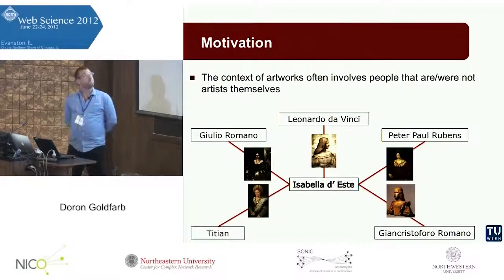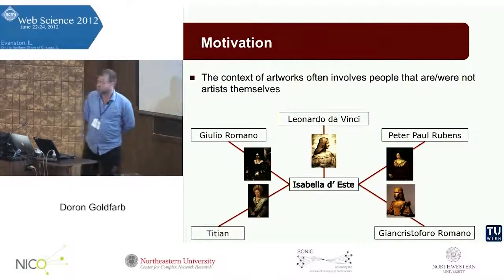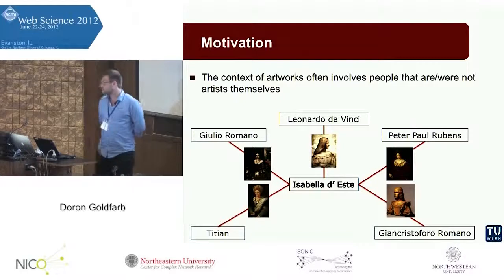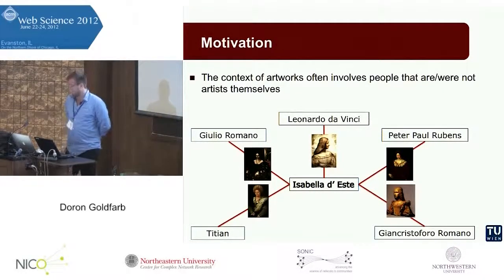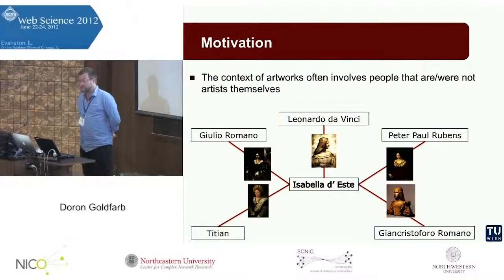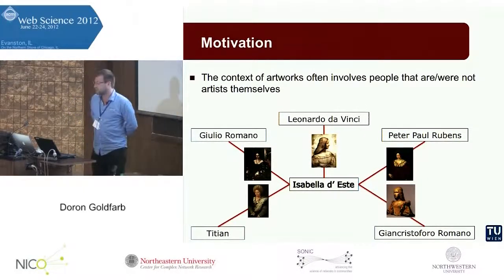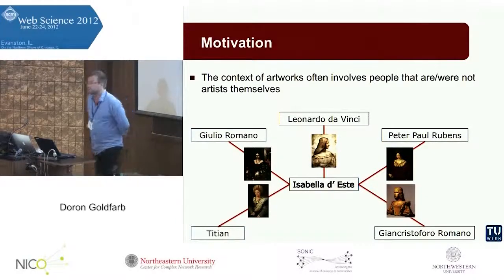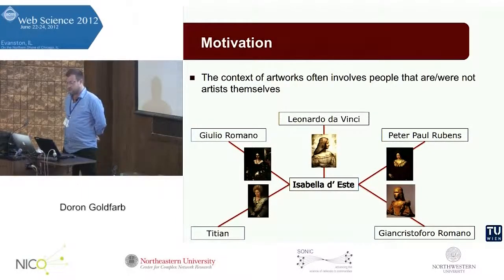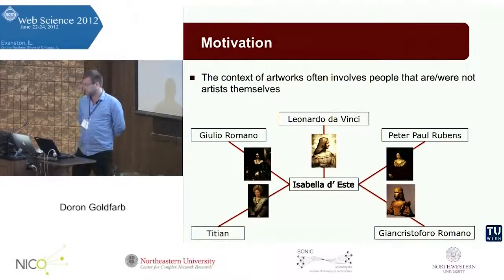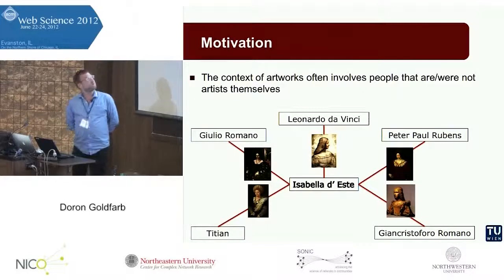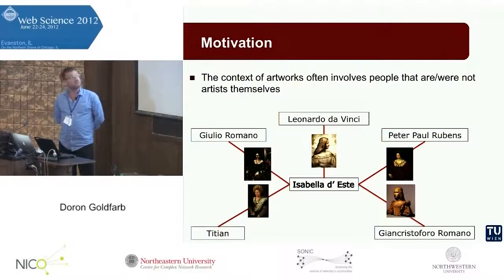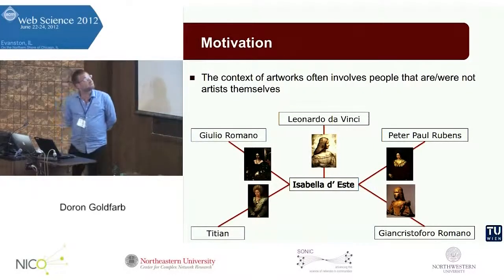I'm dealing with the presentation of artworks or art historical content or artifacts on the web. The context of artworks very often involves people who are not artists themselves. Here is an example: we have a very famous patron of the arts, a woman called Isabella d'Este, who was living in Renaissance Italy and was a very important patron. As you can see, there were a number of artworks created by very famous artists.